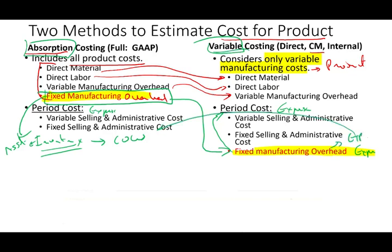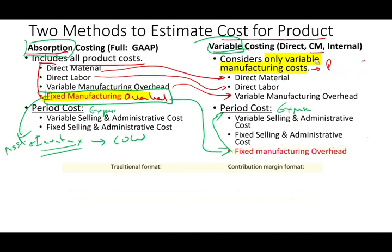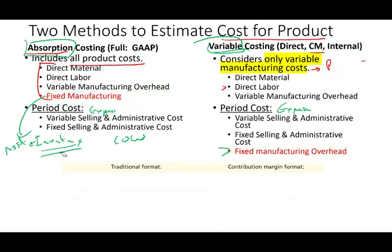Under variable costing, fixed manufacturing overhead is expensed immediately — turned into an expense during the period. Now let's look at the income statement format for each method.